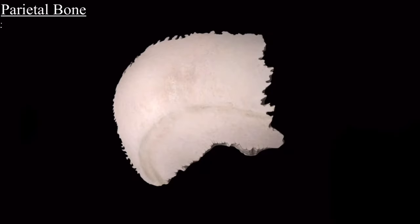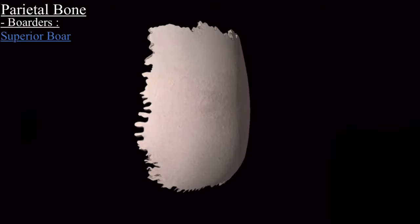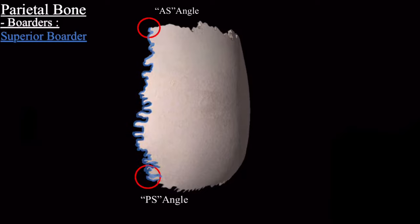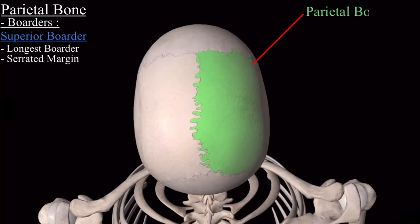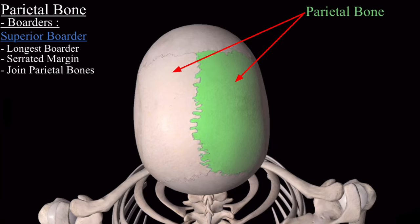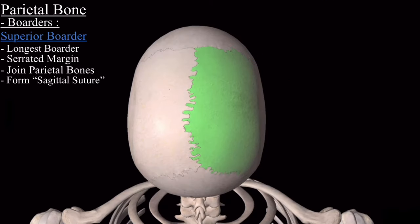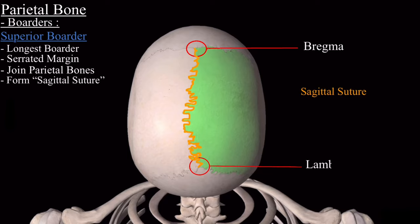Now let's move to the four borders of the parietal bone. The first is the superior border, extending from the anterior superior angle to the posterior superior angle. It is the longest of all the borders, has a serrated margin, and through the superior border it is joined with the other parietal bone. When both parietal bones are joined together, the superior border forms the sagittal suture, running from the bregma to the lambda.